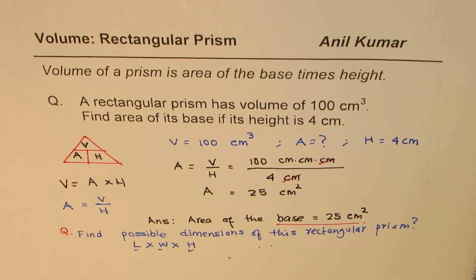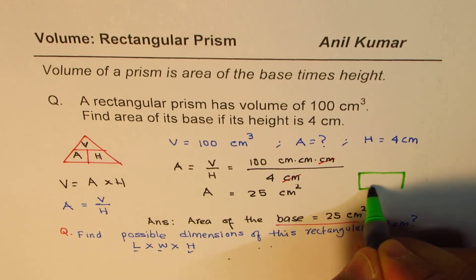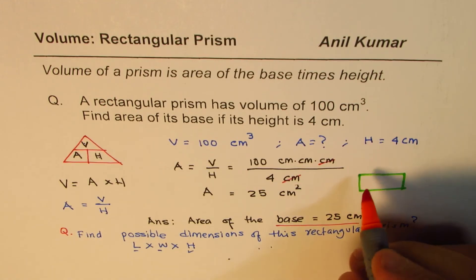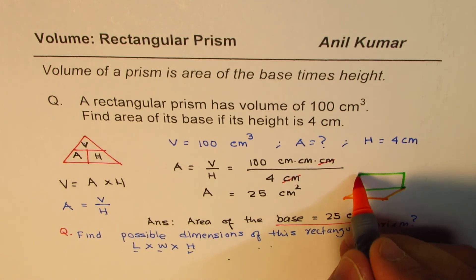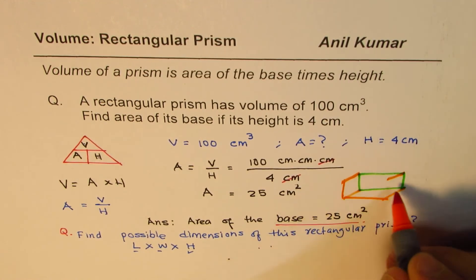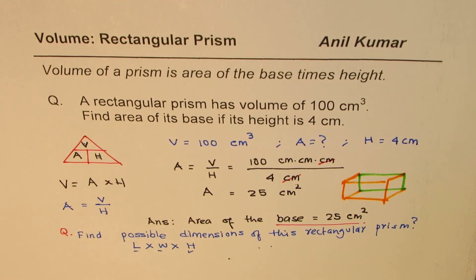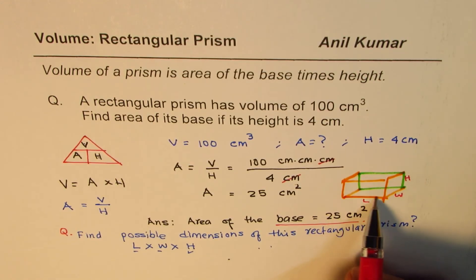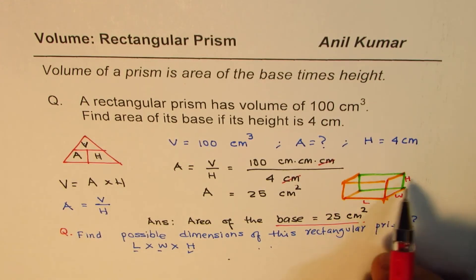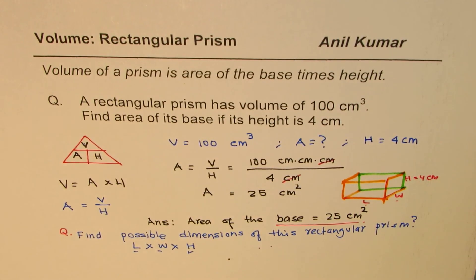Let me sketch a prism here for you to make it simpler. Here is the base. When we say dimensions, we have to give length, width, and height — these three dimensions. We know height is 4 centimeters. You need to find possible length and width when the area of the base is 25 centimeters squared.